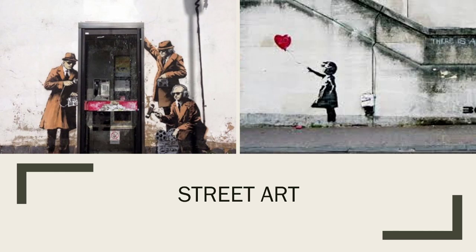The one on the right is called Girl with Balloon, created in 2002, with spray paint on a wall as its medium — medium just means the material used to make it. This is part of the street art movement, which is more modern and didn't really come into fruition until the early 2000s.